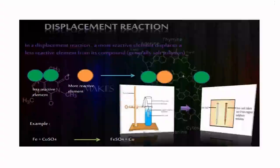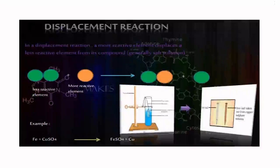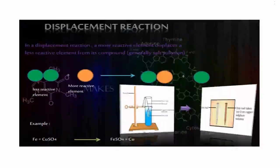Displacement reaction: In a displacement reaction, a more reactive element displaces a less reactive element from its compound, generally a salt solution. Example: Fe + CuSO4 gives FeSO4 + Cu. When an iron nail is kept in copper sulfate solution, there will be the formation of iron sulfate solution with pale green color and the iron nail develops a copper coating with brown color.